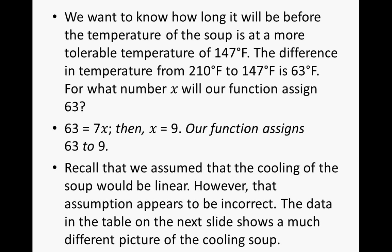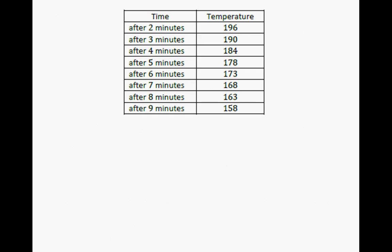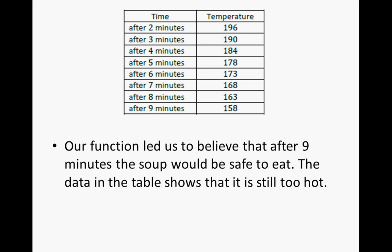Recall that we assume that the cooling of the soup would be linear. However, that assumption appears to be incorrect. The data in the table on the next slide shows a much different picture of the cooling soup. So, in actuality, if you were to stick a thermometer in the soup at each of these minute intervals, this is the temperature that you would have gotten. Our function led us to believe that after 9 minutes, the soup would be safe to eat. In the data table, it actually shows that it is still too hot. Because after 9 minutes, it's still 158 degrees Fahrenheit.